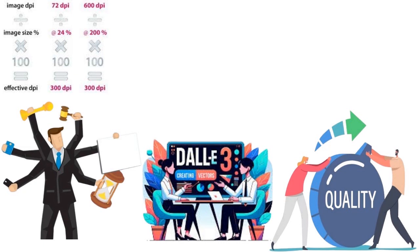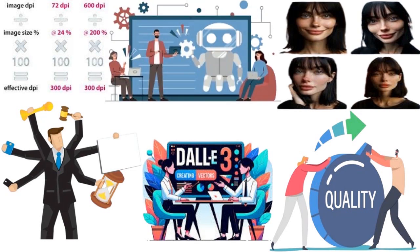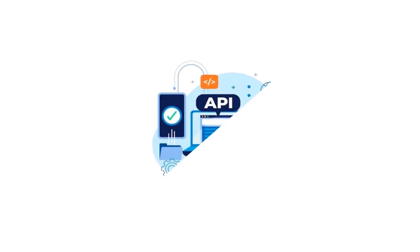On the flip side, DALL-E 3's content policy restricts the generation of faces, and it disallows certain topics, including political content. This is more restrictive than what some competitors mandate, although most AI-generative platforms forbid exploiting their tools to generate inappropriate content. In terms of pricing, DALL-E 3 comes bundled with a paid version of ChatGPT with rates starting at about $20 per month. OpenAI also offers a more intricate pricing option, including pay-per-use, enterprise plans, and licensing of its image-generator API.